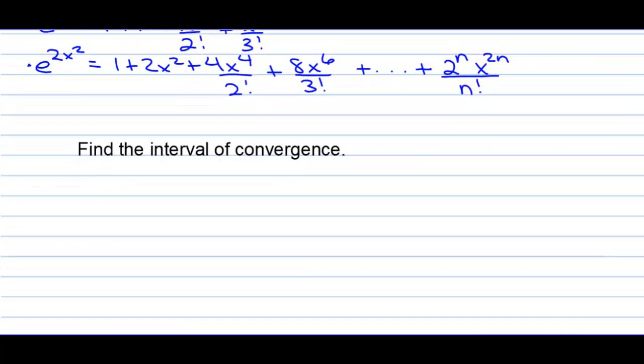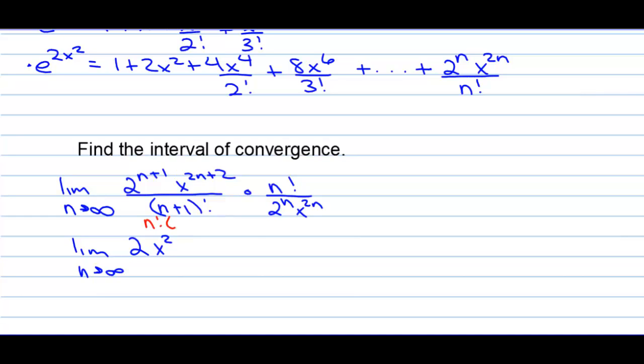Find the interval of convergence. We have the limit as n approaches infinity. There's no negatives on this, so I don't really need the absolute value, but you could have it. 2 to the n plus 1, x to the 2n plus 2 over n plus 1 factorial times n factorial over 2 to the n, x to the 2n. We have the limit as n approaches infinity of, we have an extra 2 on top. We have two extra x's on the top, which is x squared. And then I can write this n factorial stuff as n factorial times n plus 1. So, like, 6 factorial is 5 factorial times 6.